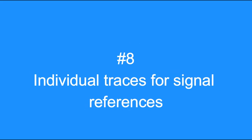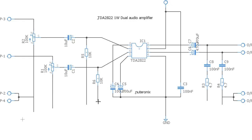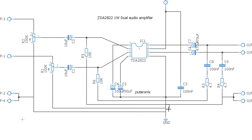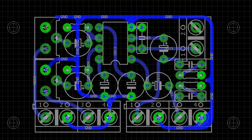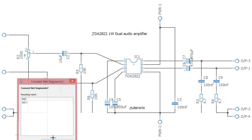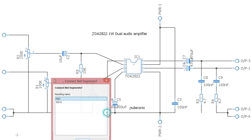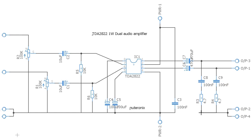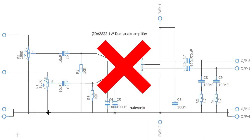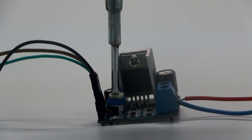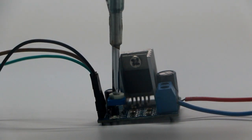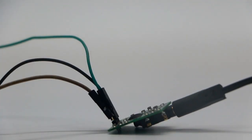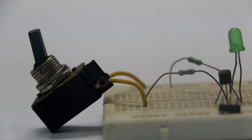Tip number 8: Individual traces for signal references. When you design a PCB or wire a circuit, provide individual traces when connecting different signal references back to the ground or common node. Avoid interconnecting references together before connecting to the common node, as doing so will result in a humming sound or noise in analog amplifiers. This also applies to wiring of input or output jacks, tone and volume controls, and switches.